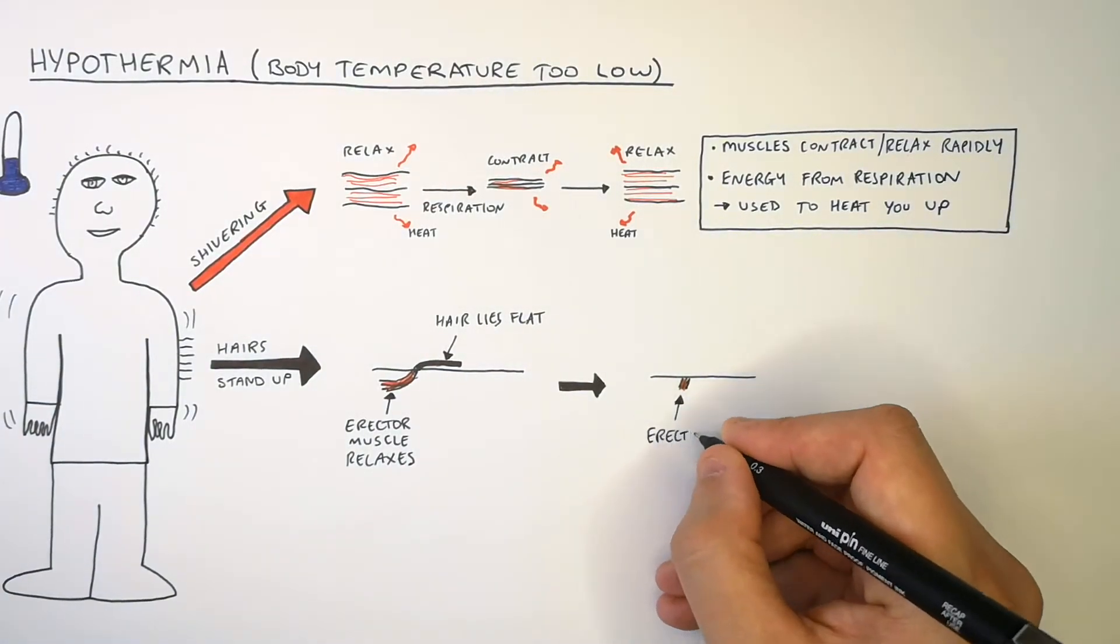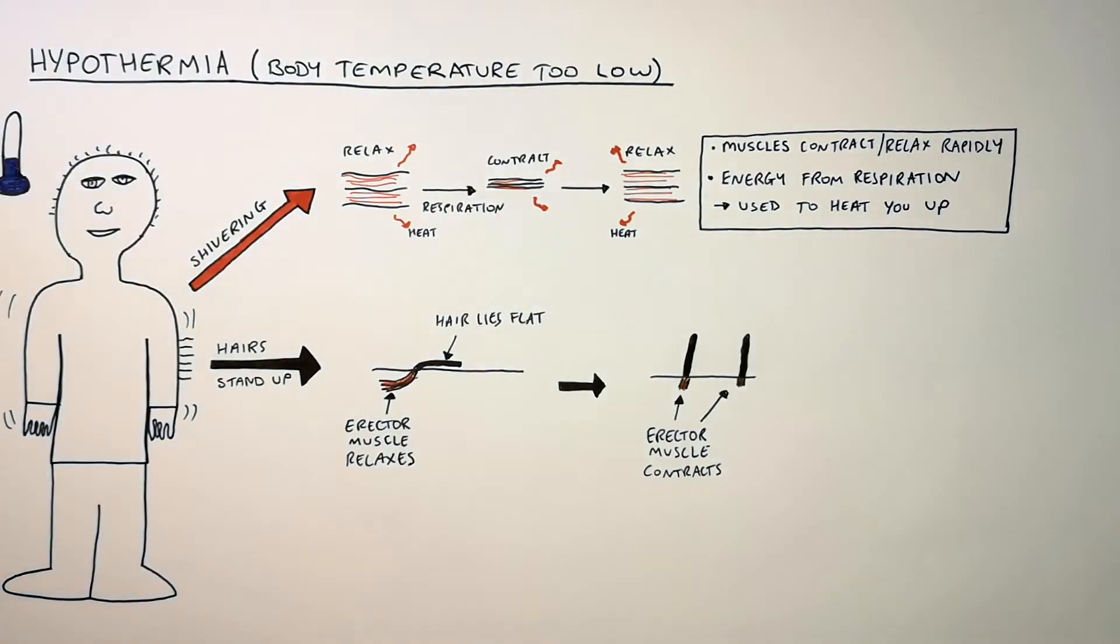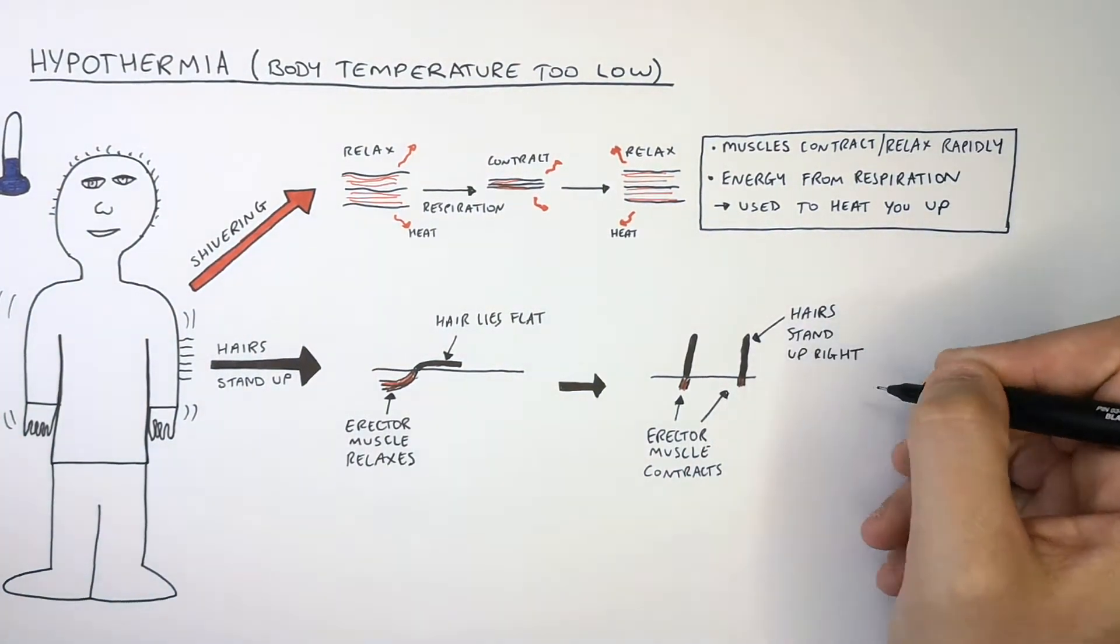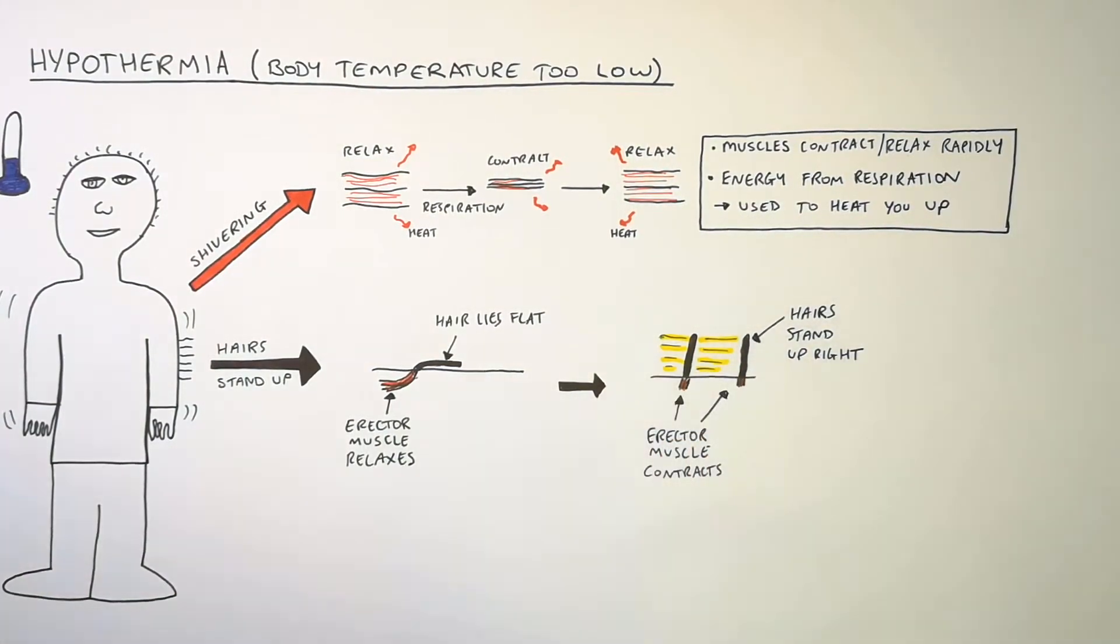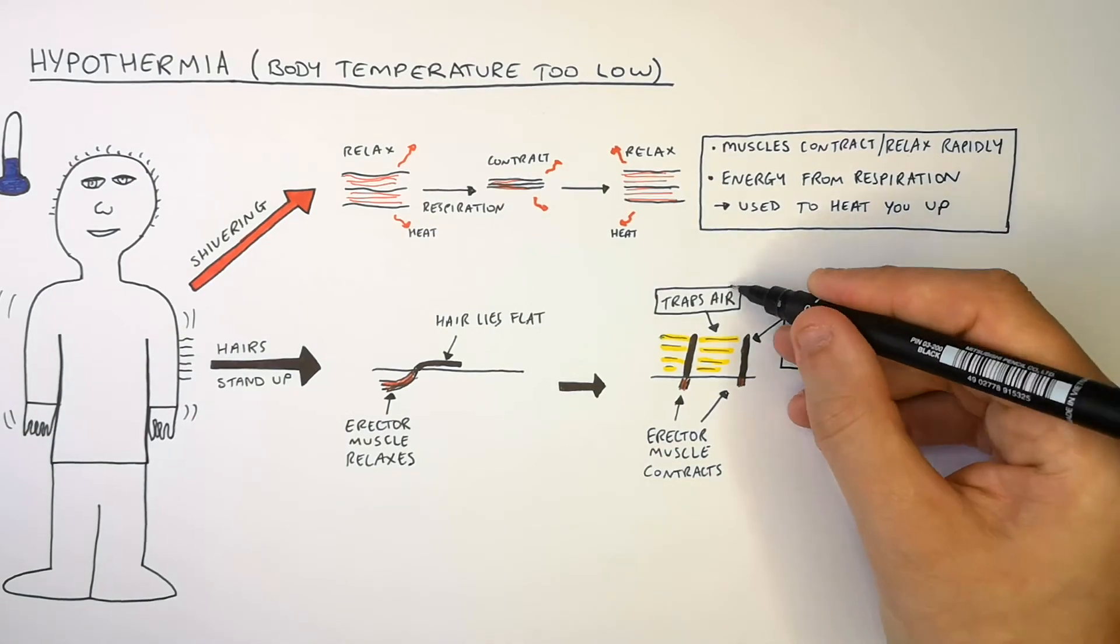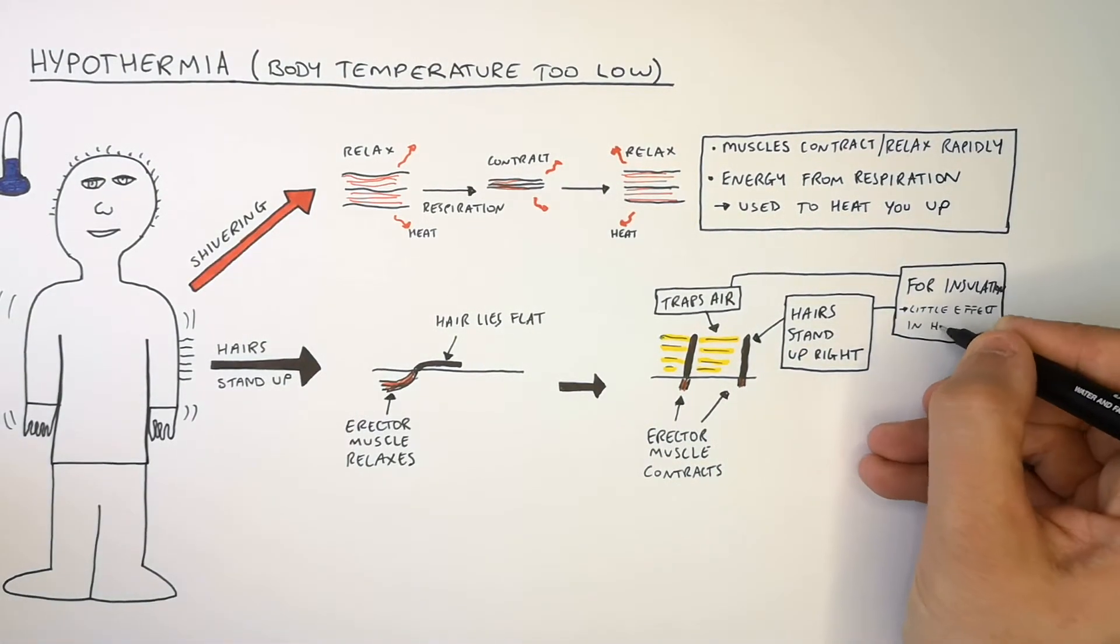However when it's cold the erector muscles contract. This causes the hairs on our skin to stand up. The hairs that stand up can now trap a thin layer of air directly above our skin and this is for insulation however this has little effect in humans.